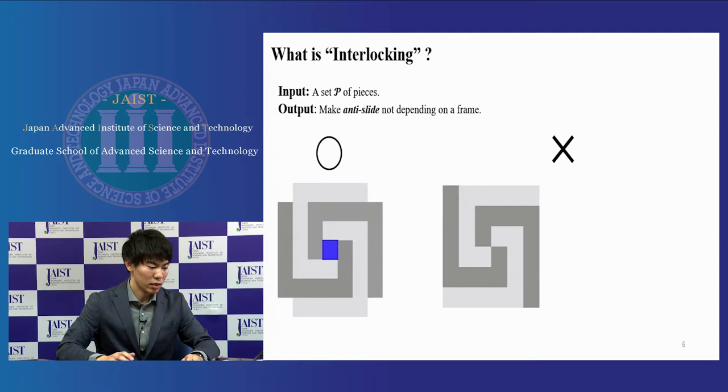This is an example of interlocking. The interlocking is a special case of anti-slide. It's given only a set of pieces without a frame F. It becomes anti-slide, not depending on a frame. The left guy is interlocking.